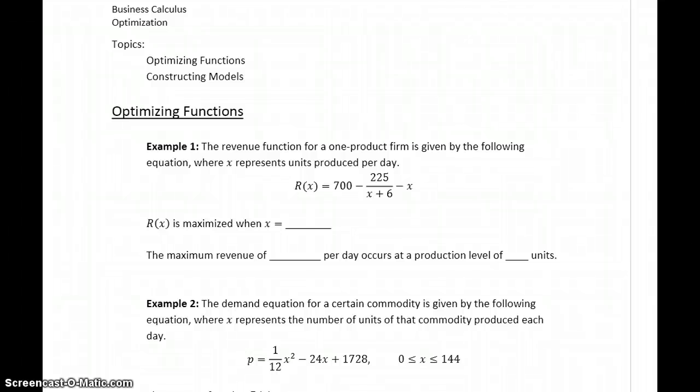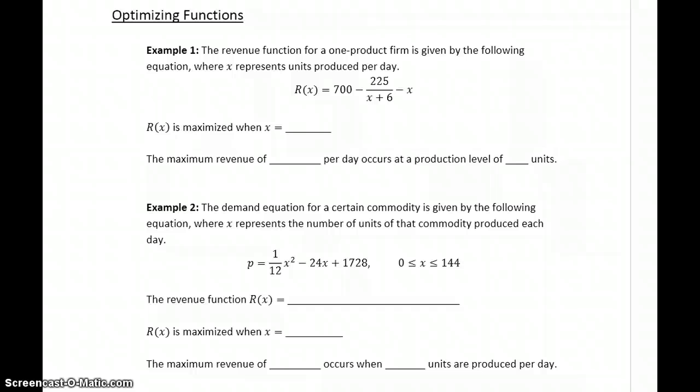And then, depending on what type of function we're talking about, those results are going to have different values or different meanings. The first few examples, we want to talk about optimizing functions, where a function is given to us or a function is more or less given to us. In example one, we're given a revenue function for a one-product firm, where x represents units produced per day. The first thing we want to do is find out what value of x would maximize our revenue function.